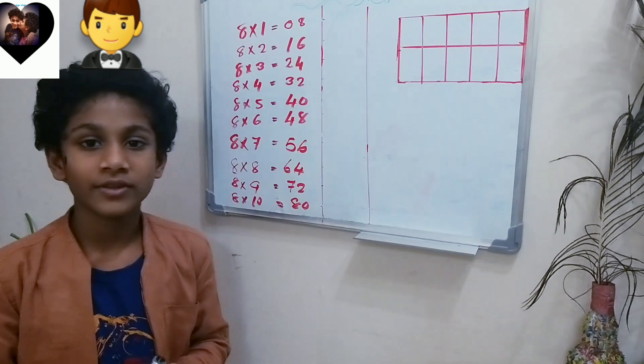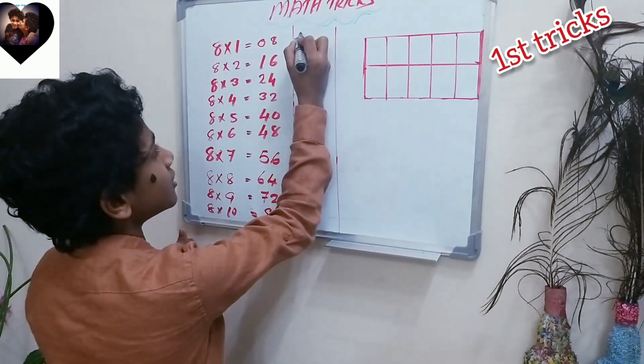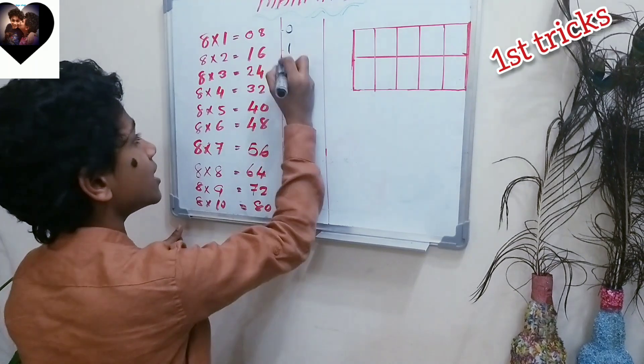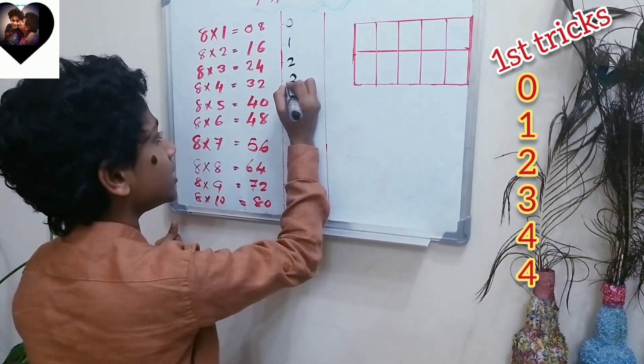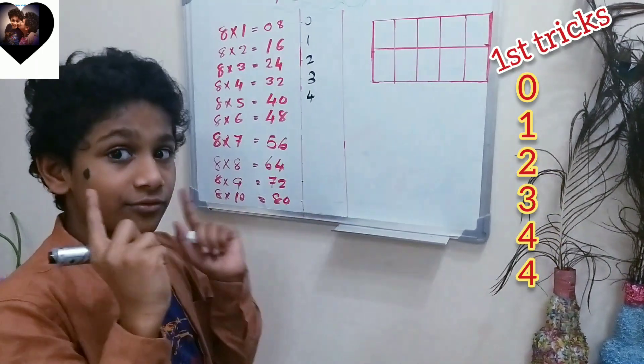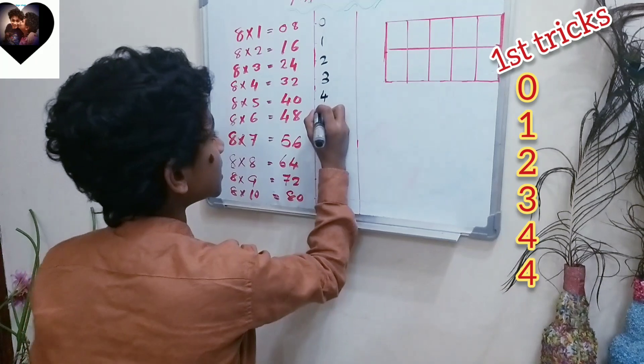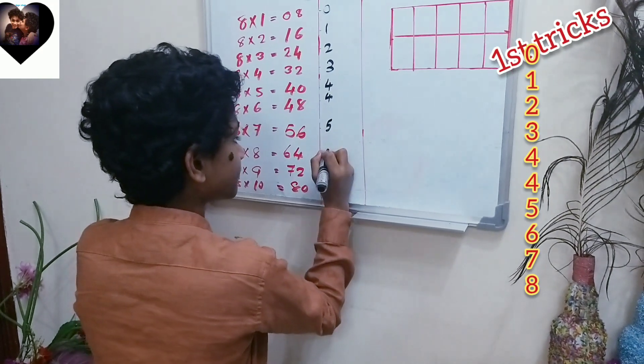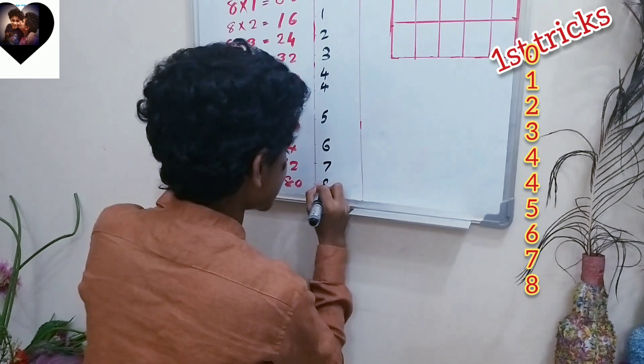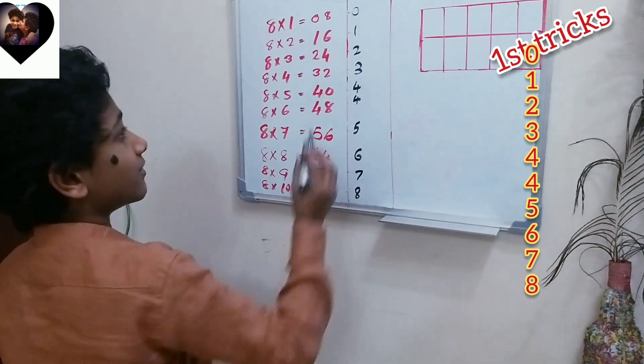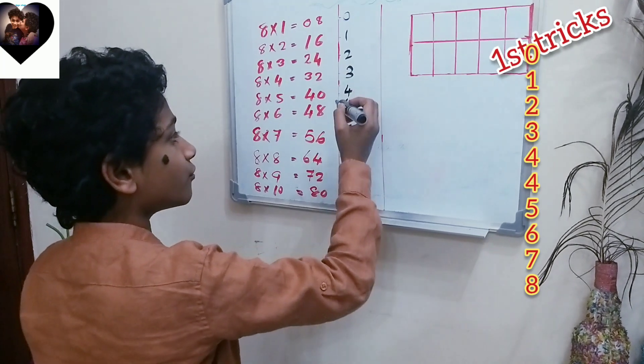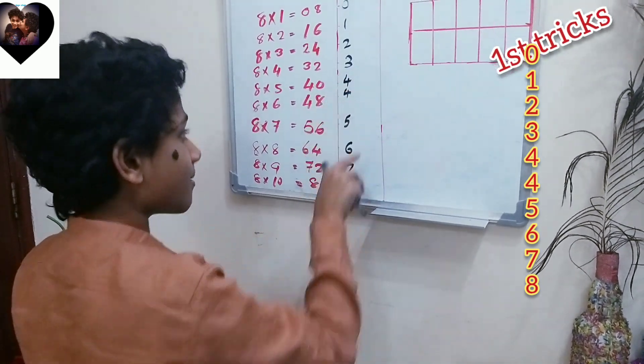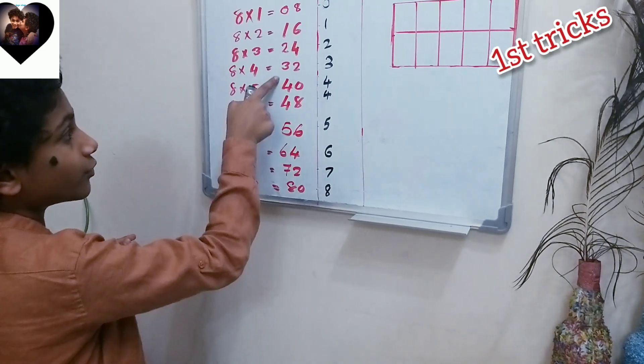The first trick is: write 0, 1, 2, 3, 4. After the 4, put one extra 4, like one more extra 4. Then continue like 5, 6, 7, and 8. As you guys can see, we have 0, 1, 2, 3, 4, 4, 5, 6, 7, 8. We have two 4s in there - that's a trick.